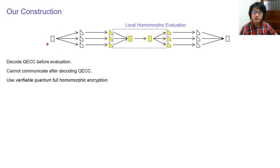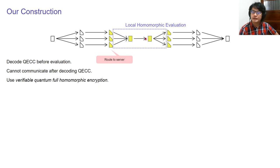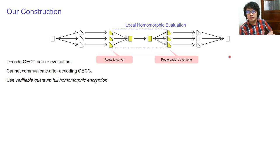To summarize the protocol step by step: everyone starts with their own input, creates packets from it, protects each packet, then routes these packets to a designated server (player 1 can be the server). The server locally combines the packets and applies the circuit to get everyone's output, creates packets from the outputs, routes everyone's output back to the appropriate parties, and each party decodes to get their own output. This is a high-level sketch — there are many interesting details brushed over due to time constraints, so please refer to the paper for a complete treatment.